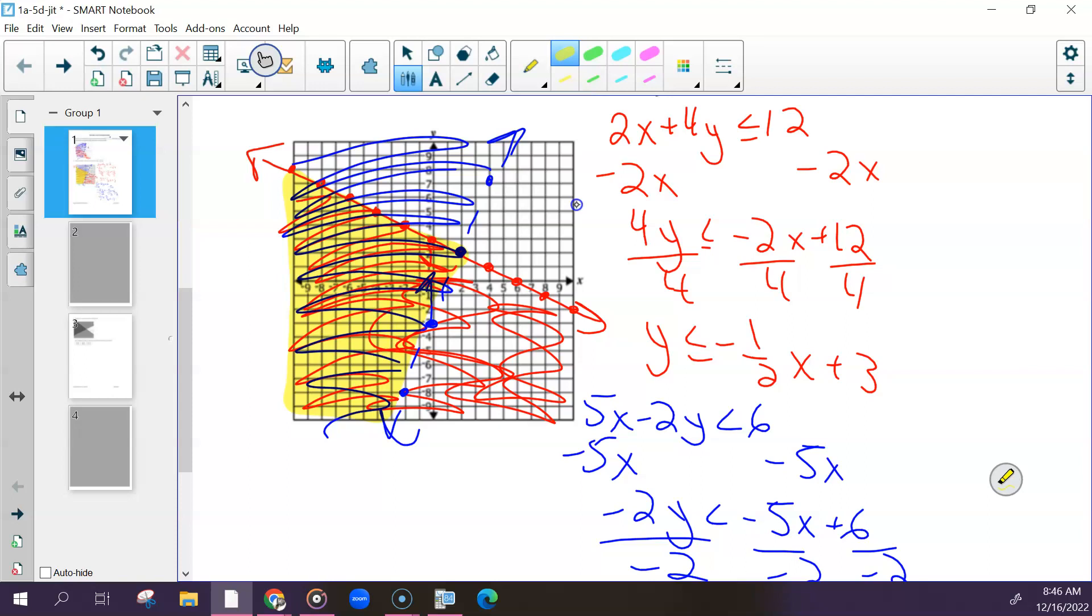Questions on that one? You didn't have to do three, but if you wanted to keep going, it's graphed already. You have ordered pairs that are listed, but some of them got cut off. You have to figure out which ones are solutions. So you can do that by either plotting it into Desmos, checking it algebraically, either one. Questions on either of those?